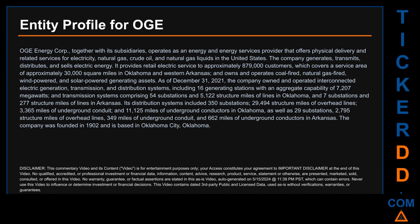The company owns and operates coal-fired, natural gas-fired, wind-powered, and solar-powered generating assets. As of December 31st, 2021, it owned and operated interconnected electric generation, transmission, and distribution systems including 16 generating stations with an aggregate capability of 7,207 megawatts, and transmission systems comprising 54 substations and 5,122 structure miles of lines in Oklahoma and seven substations.